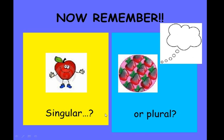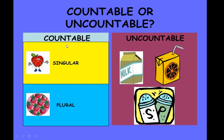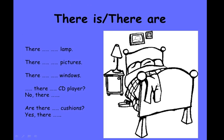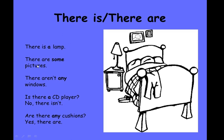Remember: for countable nouns, both singular and plural forms can be used; for uncountable nouns, there is no singular or plural distinction. Looking at a picture of a bedroom: there is a lamp, there are some pictures, there aren't any windows, is there a CD player? No, there isn't. Are there any cushions? Yes, there are.